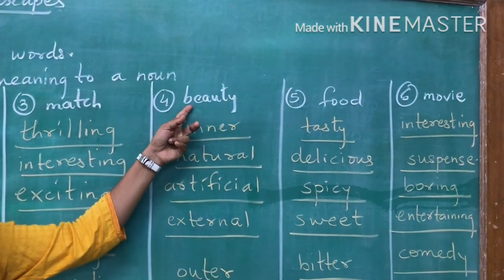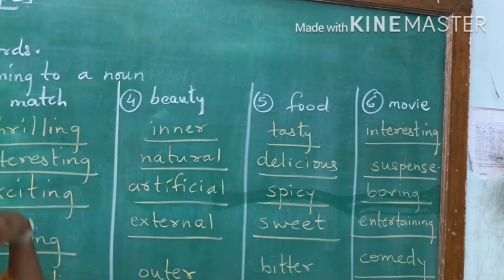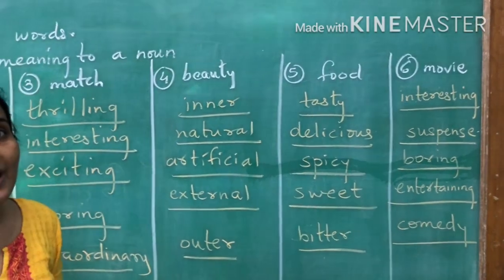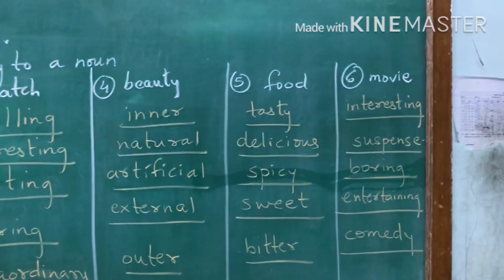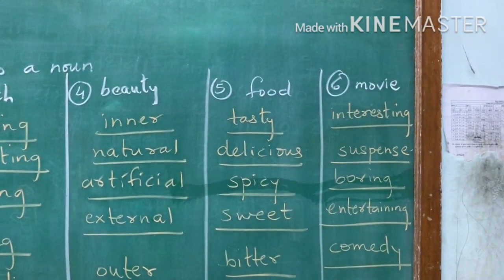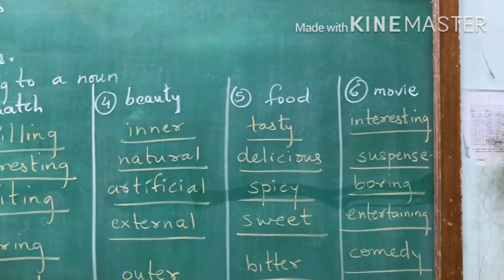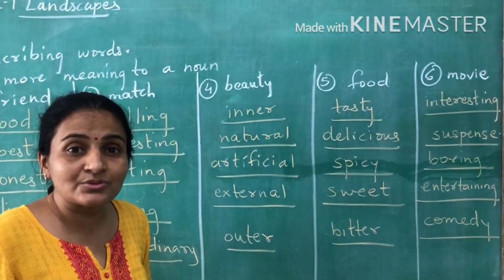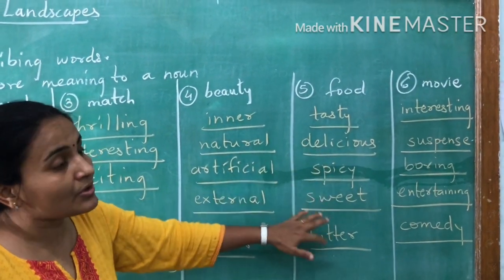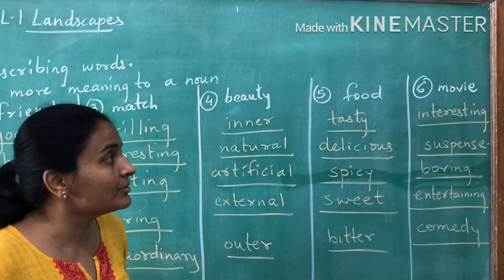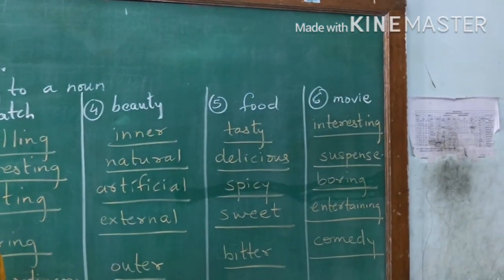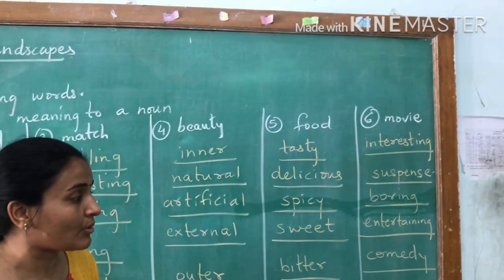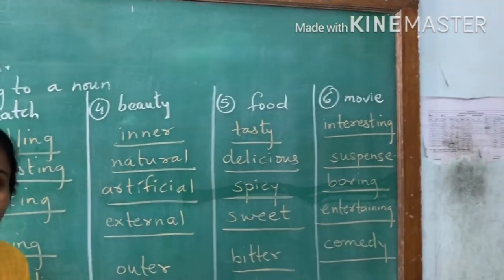As far as the word 'beauty' is concerned, it can be inner beauty, outer beauty, external beauty, natural beauty, or artificial beauty. For 'food,' you can say it was delicious, tasty, spicy, sour, sweet, or bitter. Then for 'movie,' a movie can be interesting, suspense, comedy, boring, or entertaining.